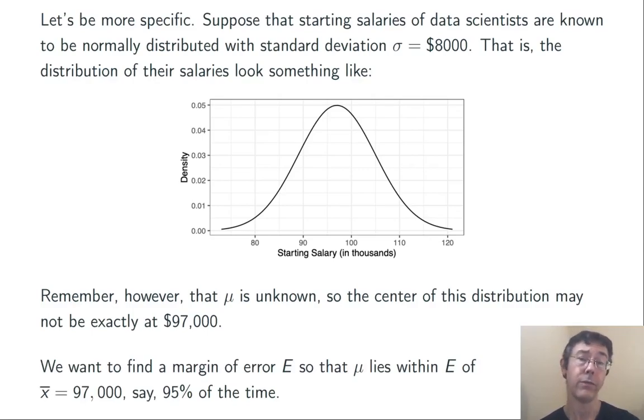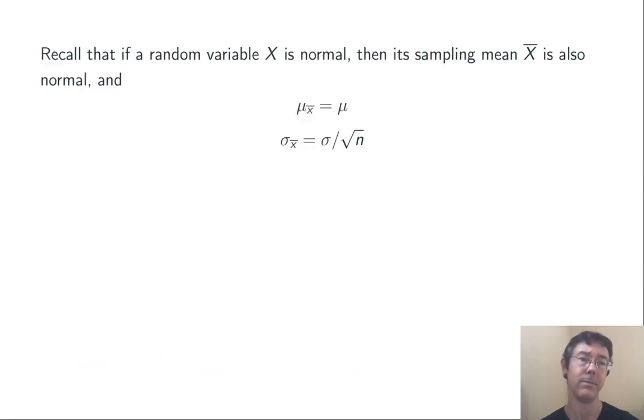Our goal here is to find a margin of error, capital E, so that mu lies within E of X bar, $97,000, let's say 95% of the time. Let's choose that as our confidence level.